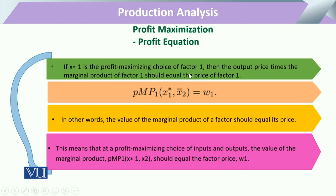The profit-maximizing choice of factor one — one input, which can be capital, labor, or many others — allows us to assess how, with one factor input, the output level will change and how the firm will increase its profit. If there is a change in the other input, we can also assess what the change in the respective output will be. The output price is multiplied by the marginal product of factor one, and that equals W.